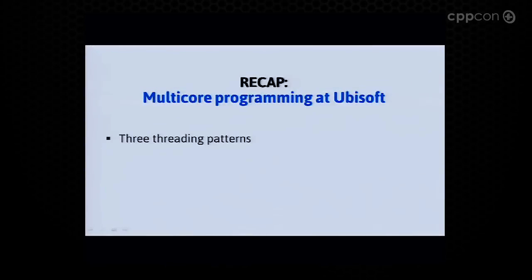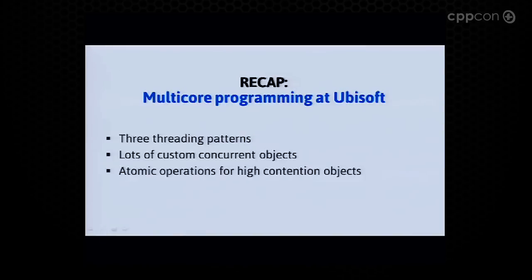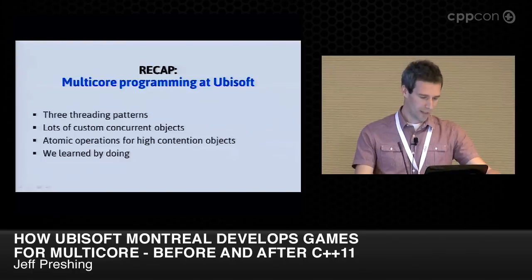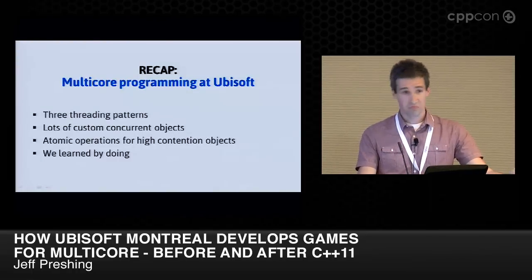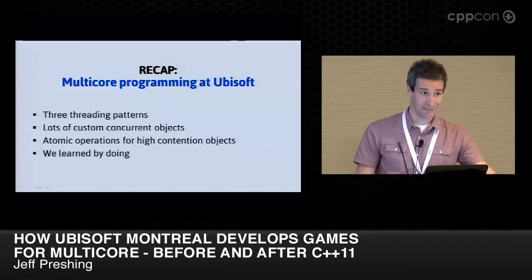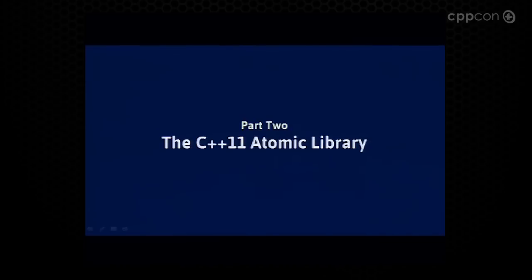The main takeaways from part one: every game engine has some blend of those three threading patterns — it's more art than science. There's a need for a lot of custom concurrent objects, and when those are under heavy contention, that's when it's time for atomic operations. We learned very much by doing.